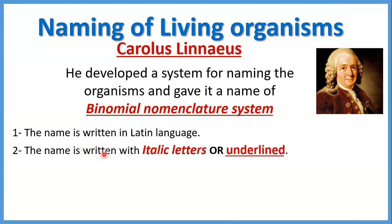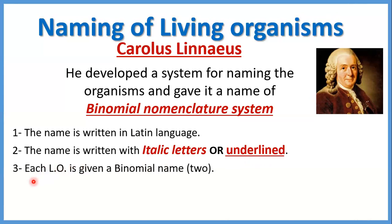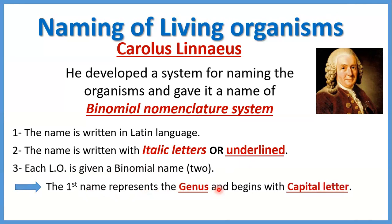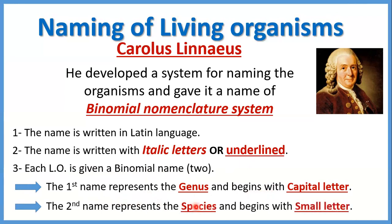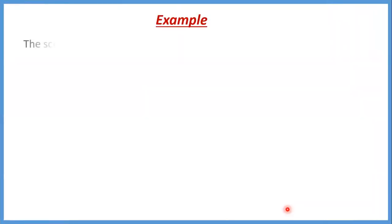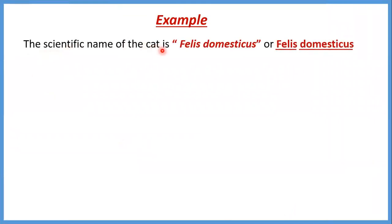الشرط التاني: the name is written with italic letters — دي الletters اللي بتبقى مايلة على جنب، وبنسميها italic letters، أو بنكتبها بالطريقة العادية بس بتبقى underlined. الشرط التالت: each living organism is given a binomial name — يعني two names. أول name بيكون represent الgenus، where it must start with a capital letter. التاني name represent الspecies بتاعته، and it begins with a small letter.